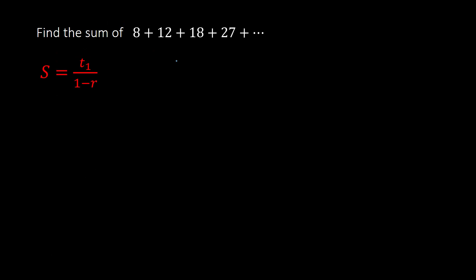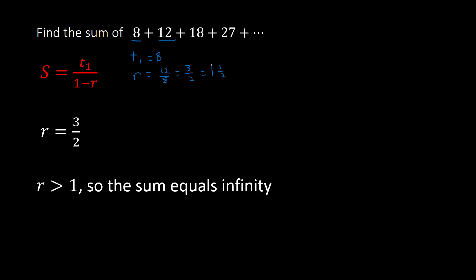Here is one last example: 8 plus 12 plus 18 plus 27, etc. T1 is 8. The common ratio is 12 divided by 8, which reduces to 3 over 2. Notice the common ratio is 3 halves, which is bigger than 1 — it equals 1 and 1 half. Because it is bigger than 1, the sum would be infinity. The numbers keep getting bigger and bigger, so if you keep adding forever, this sum would not have a solution because it would approach infinity. That concludes our lesson for today.